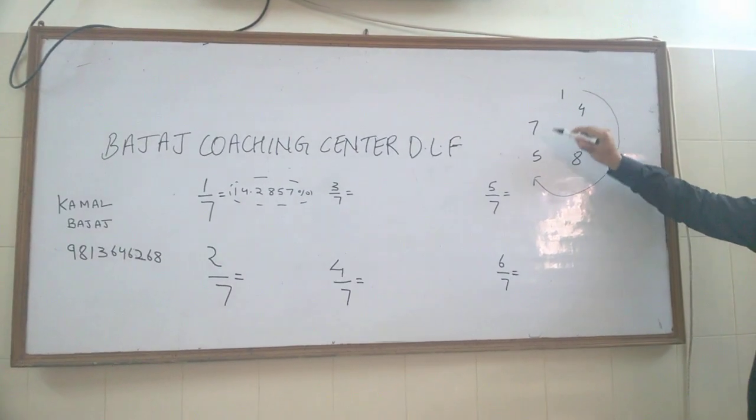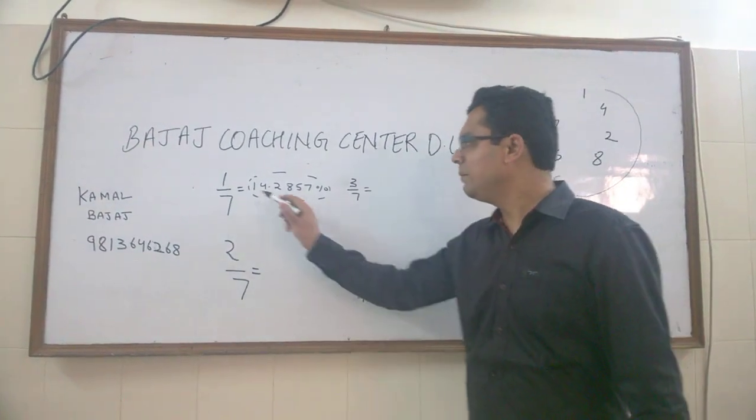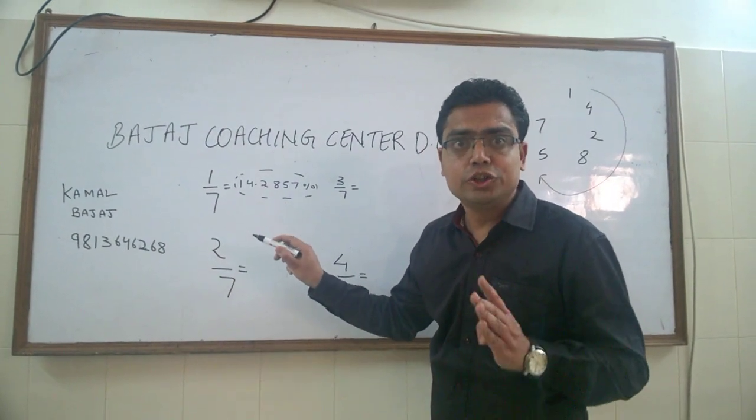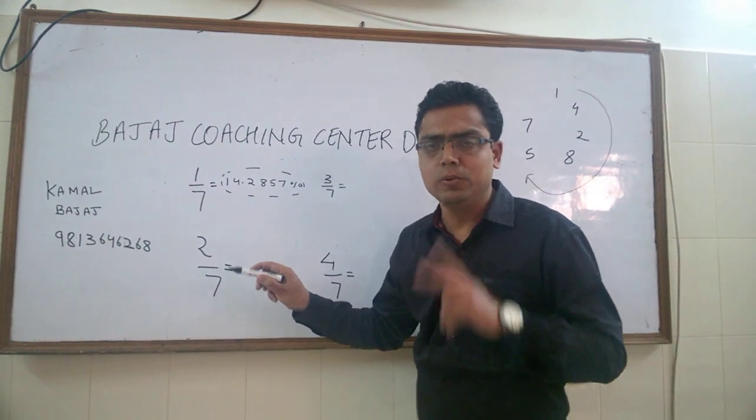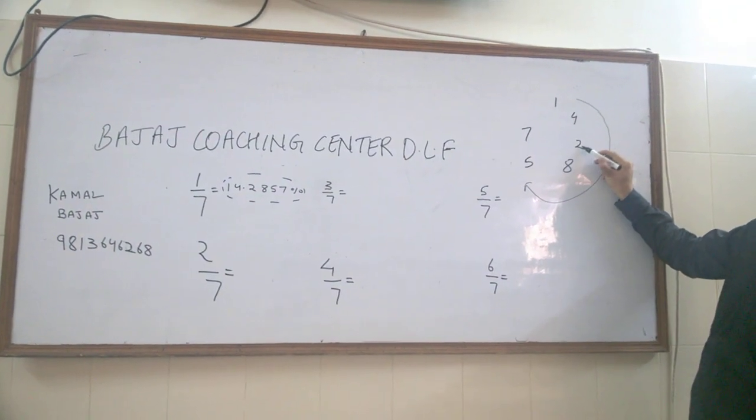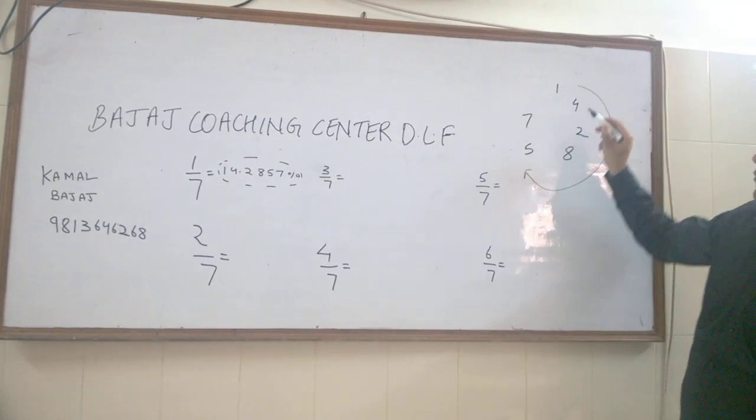Now what about other fractions? Two by seven. If one by seven is 14 point something, then two by seven should be 14 double, which is 28. It should start with two. Where is two? Yes, here it is: 28.5714.